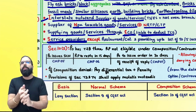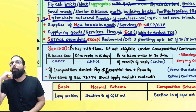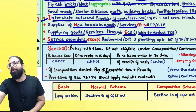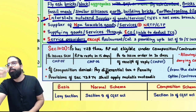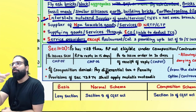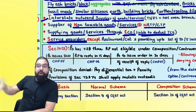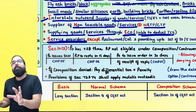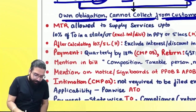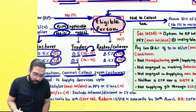One problem arose: service providers are ineligible for Composition Scheme. So if I am a trader and I put money in a bank and receive interest — that is an exempt supply of service, making me technically a service provider. Service providers are ineligible. But the government said: even if your turnover includes interest income, we will exclude interest or discount income when checking eligibility. So you are still treated as a goods supplier and remain eligible.